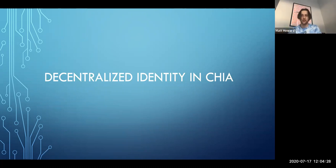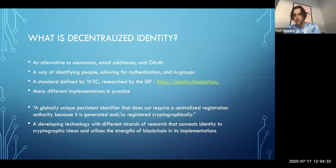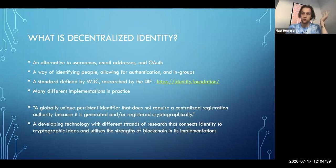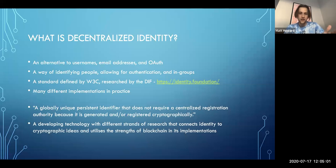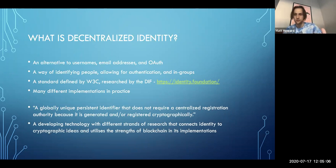The first question is: what is decentralized identity? This ties into the question of what is identity. Online identity at the moment takes the form of usernames, email addresses, and Facebook OAuth tokens — it's more or less a way of identifying people, and you can then use that for authentication and to form groups.